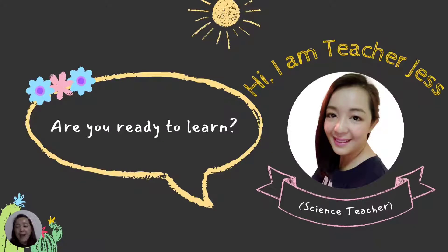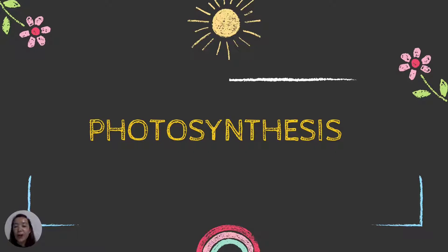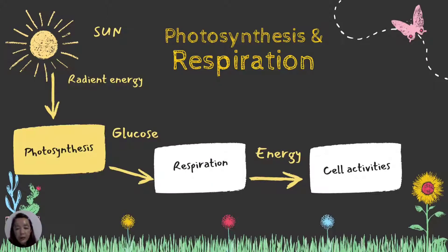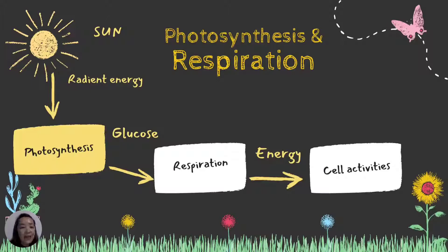For today we are going to learn about photosynthesis. Before that, we are also going to discuss respiration, but for now we will study photosynthesis first. We all know that the sun is the source of energy — the sun is radiant energy. Photosynthesis happens in plants, and photosynthesis produces glucose, which plants use to survive.